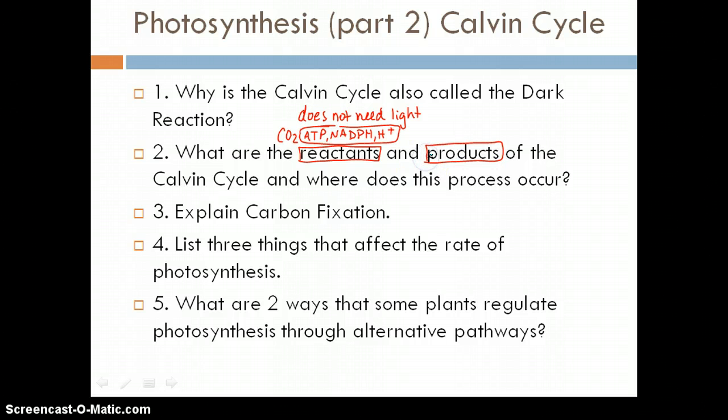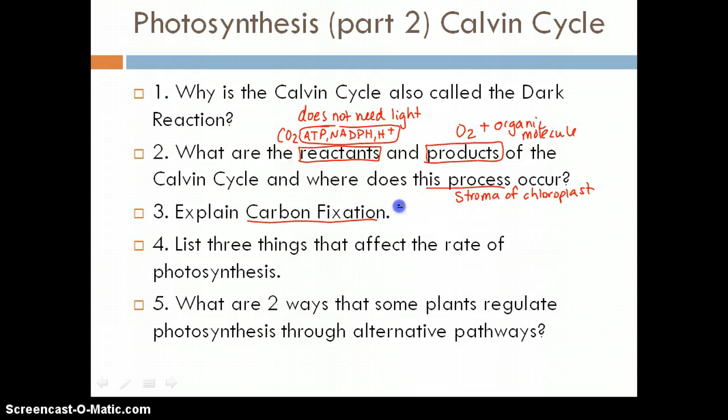The products at this point are going to be kind of our final products of photosynthesis, which will be some oxygen and then the organic molecule, which is generally sugar, as how the formula is, C6H12O6. Where this occurs, so if you're looking at your dark reaction information, it will still happen in the chloroplast, but it happens in the stroma of the chloroplast. Carbon fixation is taking carbon atoms and bonding them into organic compounds. And that process happens here in the dark reaction.